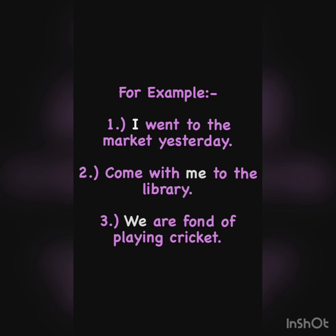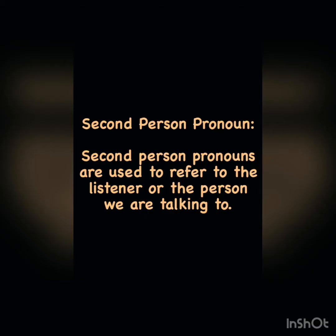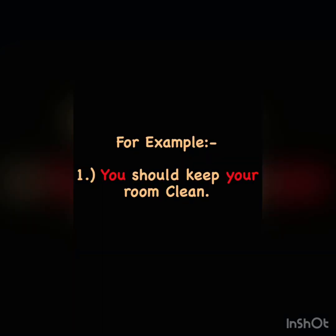Now let's move to the second kind, which is second person pronouns. Second person pronouns are used to refer to the listener, or the person we are talking to — jinsay hum baat kar rahe hote hain woh humare second person pronoun ho jate hain. For example: 'You should keep your room clean' — here we are saying to someone that you should keep your room clean.